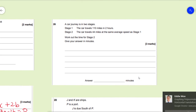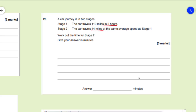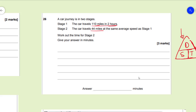Next is a compound measures question. A car journey is in two stages. In stage 1, the car travels 110 miles in 2 hours. In stage 2, it travels 44 miles at the same average speed as stage 1. We need to find the time for stage 2 in minutes. First, find the speed for stage 1: speed = distance ÷ time = 110 ÷ 2 = 55 miles per hour.